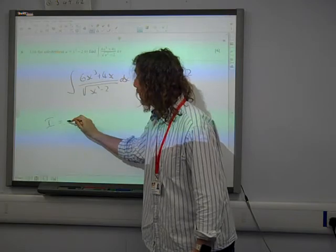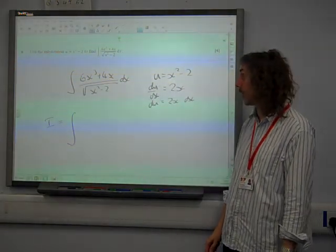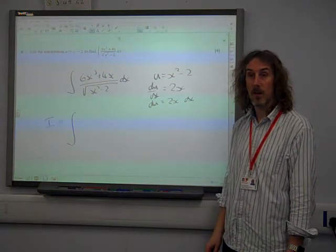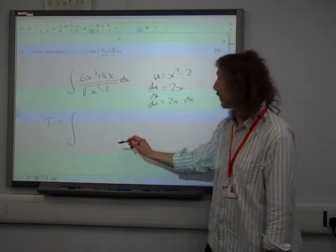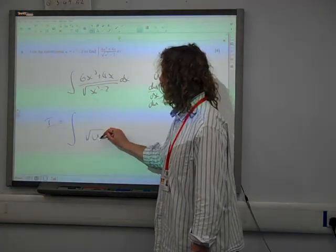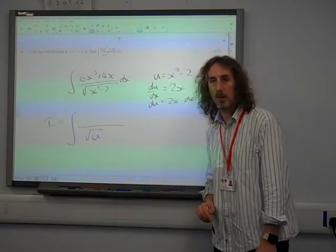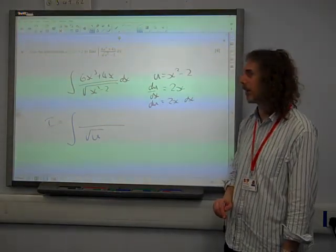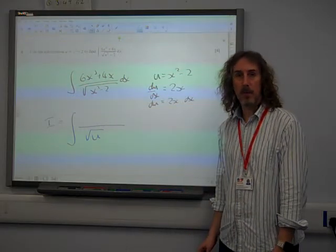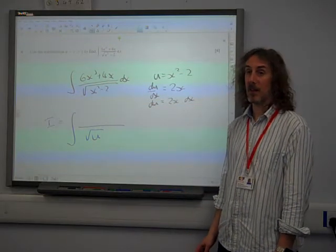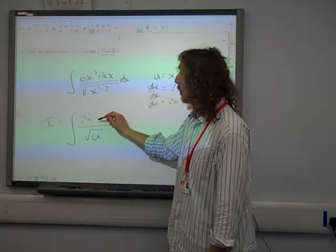So the integral becomes, the bottom line's fine. The bottom line is the square root of x squared minus 2. So that is the square root of u, isn't it? On the bottom. That's fine. Let's see what we can do with the top line. We've got 6x cubed plus 4x. I'm struggling to see a way forward immediately, so let's factorise that. Because it obviously has got some factors.